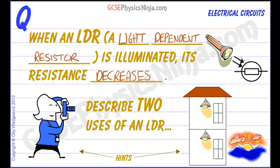So why is this? Well, as the light rays go in and hit the material in the LDR, which is a type of semiconductor, the atoms of that material get excited and they release more electrons which are available for conduction. So that means it's easier for a current to flow through the LDR.